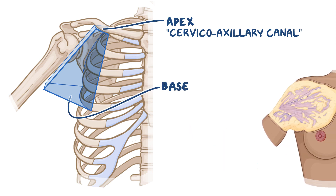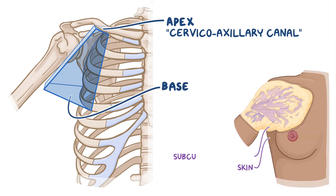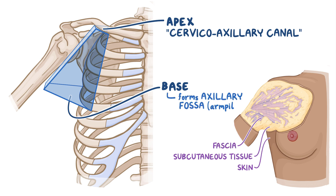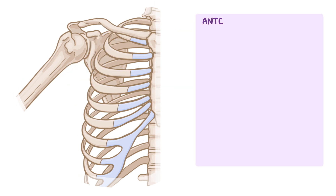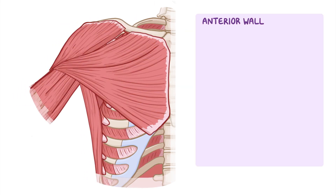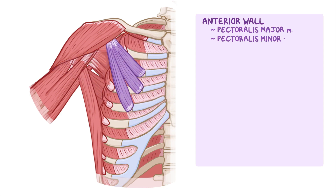The base of the axilla is formed by skin, subcutaneous tissue, and axillary fascia, and forms what is called the axillary fossa, or what we know as the armpit. Moving on to the four walls of the axilla, the anterior wall is made up by two muscles: the pectoralis major and pectoralis minor. The inferiormost aspect of the anterior wall is called the anterior axillary fold and it's formed by the pectoralis major.